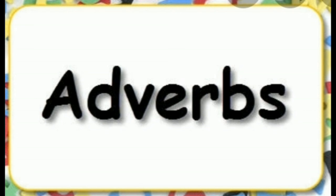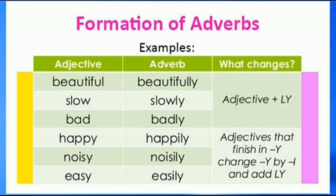Now we will see how adverbs are formed. Adverbs are formed by replacing the ending of adjectives with -ly. For example, we add L-Y to the adjective slow and we get slowly. Beautiful becomes beautifully. Bad becomes badly.